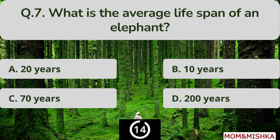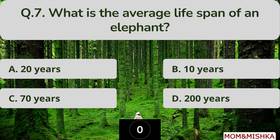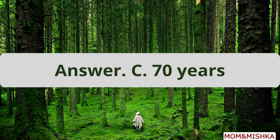What is the average lifespan of an elephant? It's 70 years. Option C.